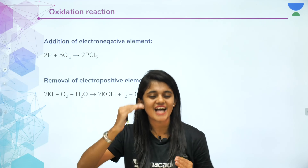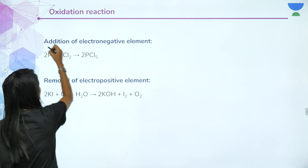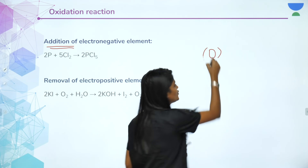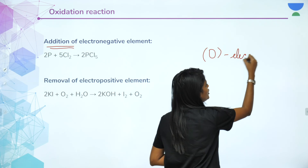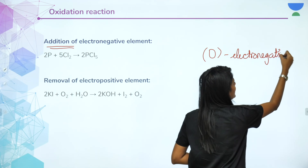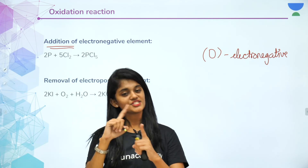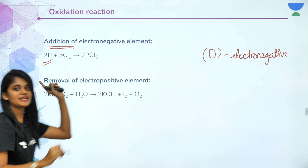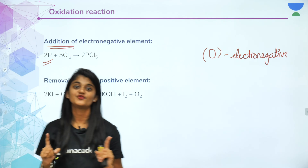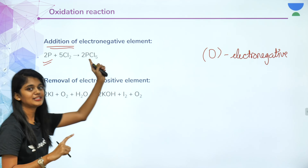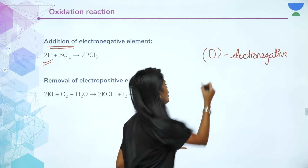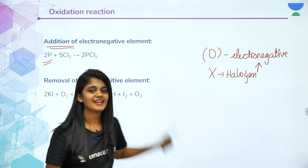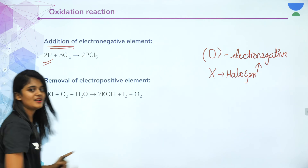For oxidation, the first definition was addition of an electronegative element. Oxidation is addition of oxygen, and oxygen's nature is electronegative — so it can also be addition of an electronegative element. For example: phosphorus plus chlorine gives phosphorus pentachloride. Here, chlorine is being added to phosphorus. Since all halogens are electronegative atoms, this addition of a halogen is an oxidation reaction.